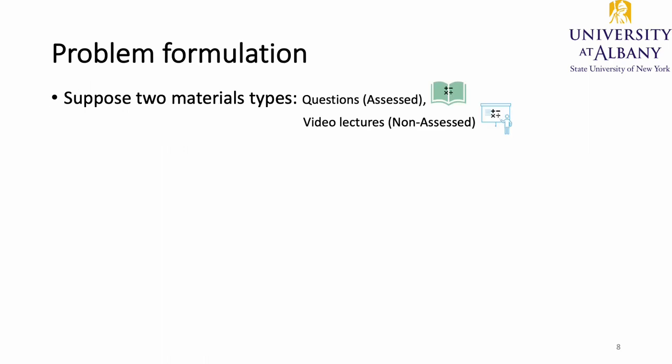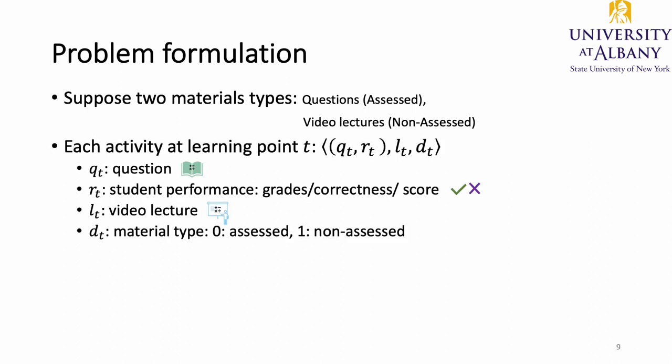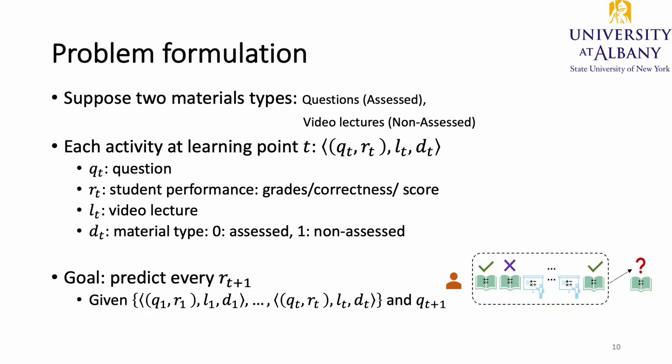Let's first state our problem formulation. Suppose we have two learning material types: questions and video lectures. We formulate each student learning activity at learning point T as (QT, RT, LT, DT), where QT represents the question ID with student performance RT, and LT represents the video lecture ID. DT is a binary value indicating the learning material type at each learning point: zero for question and one for video lecture. Our goal is to predict every student's performance at each learning point, given their historical activities and the question they will interact with next.